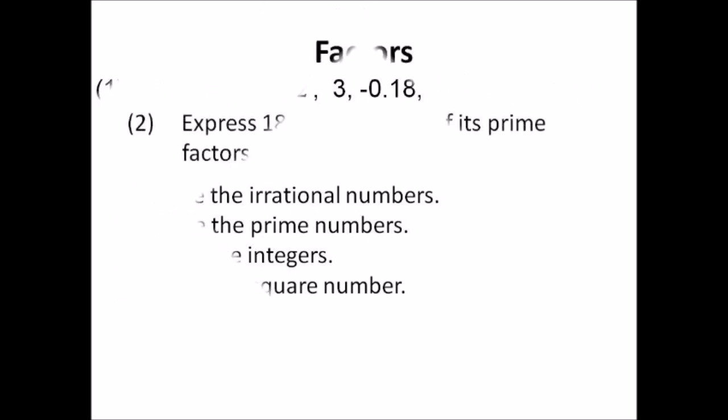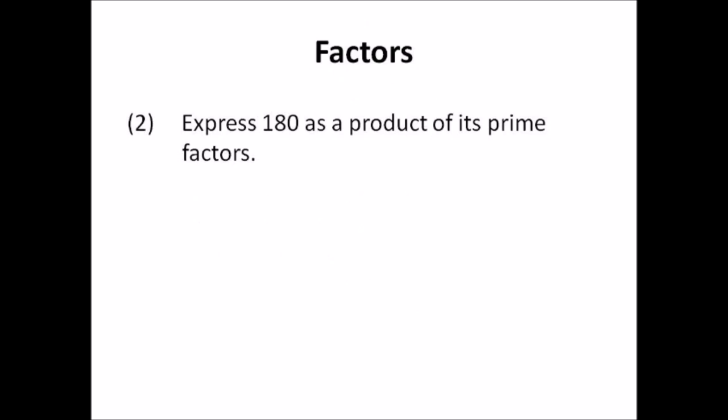Number two: factors. Express 180 as a product of its prime factors. Use your calculator — divide and keep dividing until you get one, then give me 180 as a product of its prime factors. I normally begin by dividing by two, but you don't have to. Continue dividing until you reach the end.